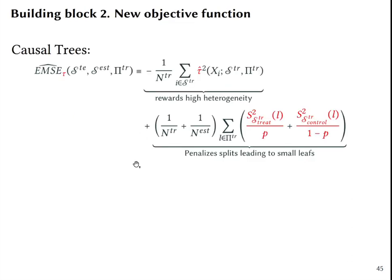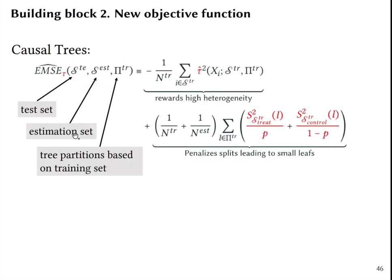The building block number two for causal trees is that causal trees change this objective function. The causal trees also want to minimize the expected mean squared error of the treatment effects for any new test set, but using an estimation set and the tree partition that is based on training set. This formula changes as the first part rewards high heterogeneity in treatment effects, not the means, and the second part penalizes the splits that lead to two small leaves.